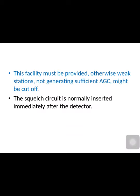This facility must be provided; otherwise weak stations which are not generating sufficient automatic gain control might be cut off. When the signal strength is weak, the voltage gain control is lower, and if we don't use this circuit, we cannot tune our receiver to that frequency. The squelch circuit is generally used directly after the detector, and after the squelch circuit comes the next amplifier stage.